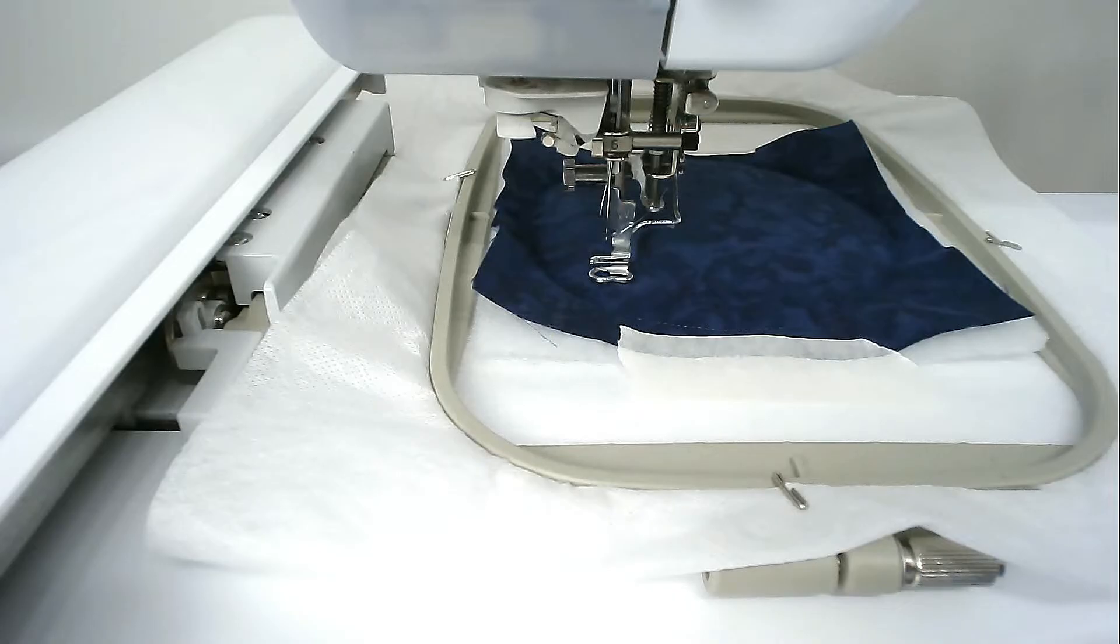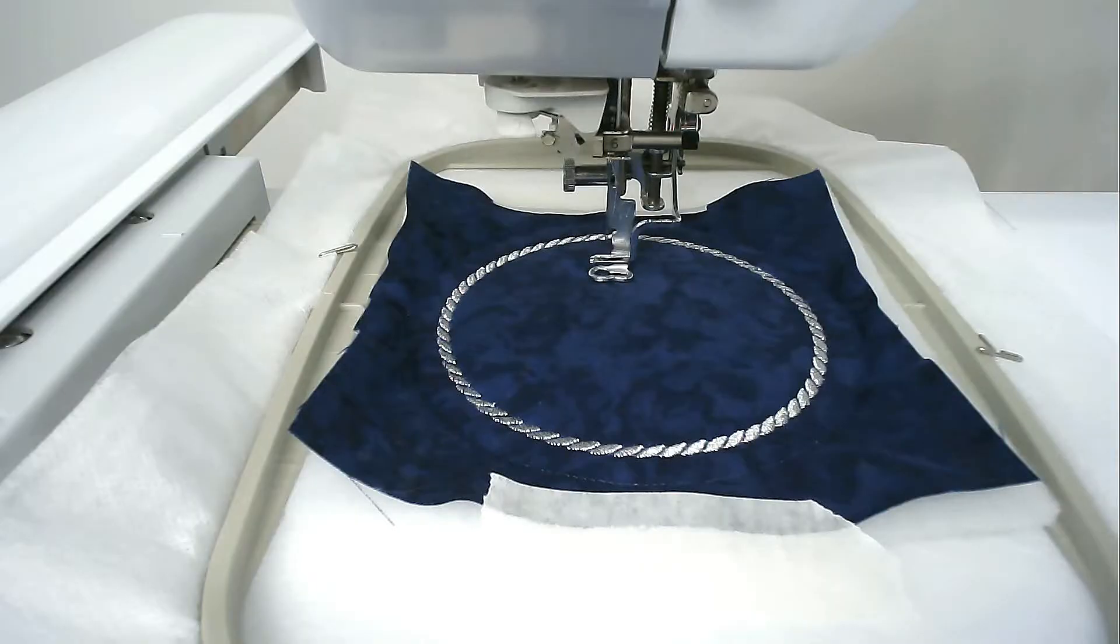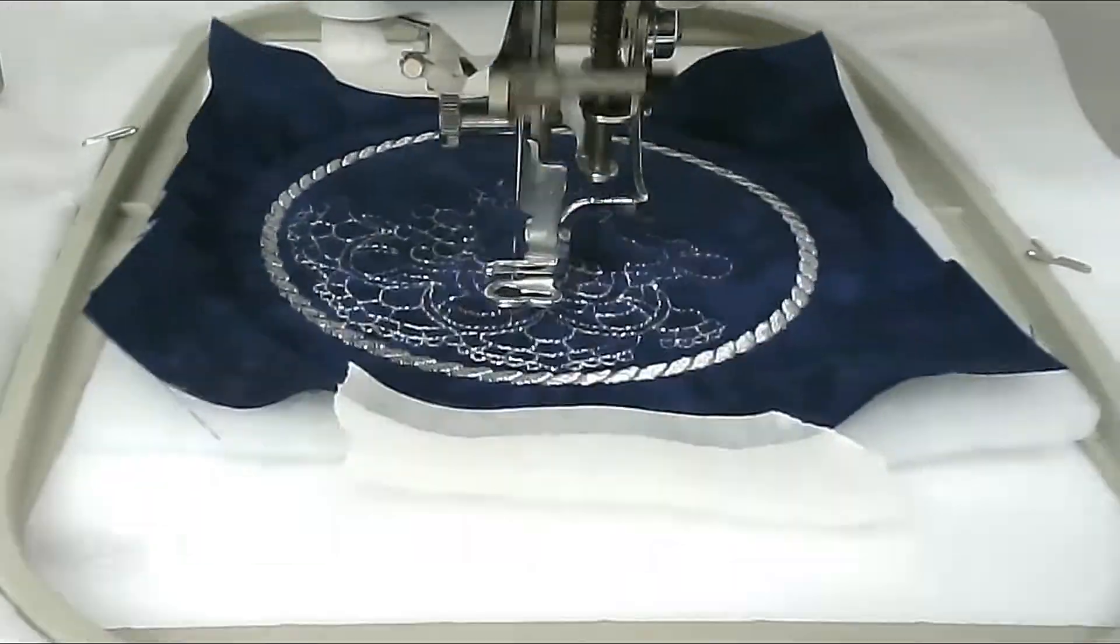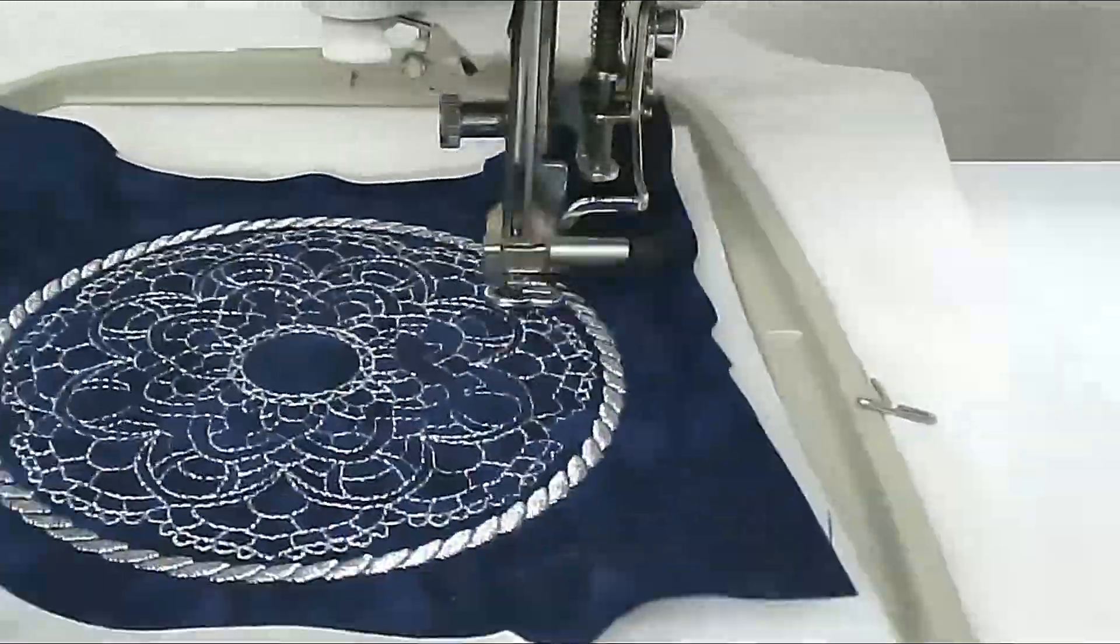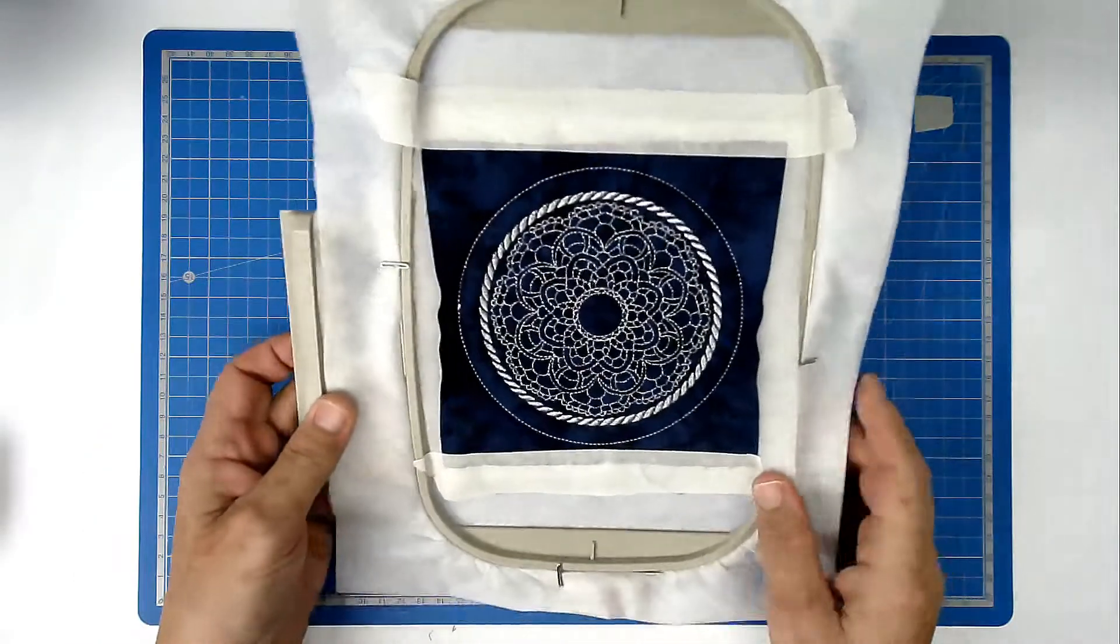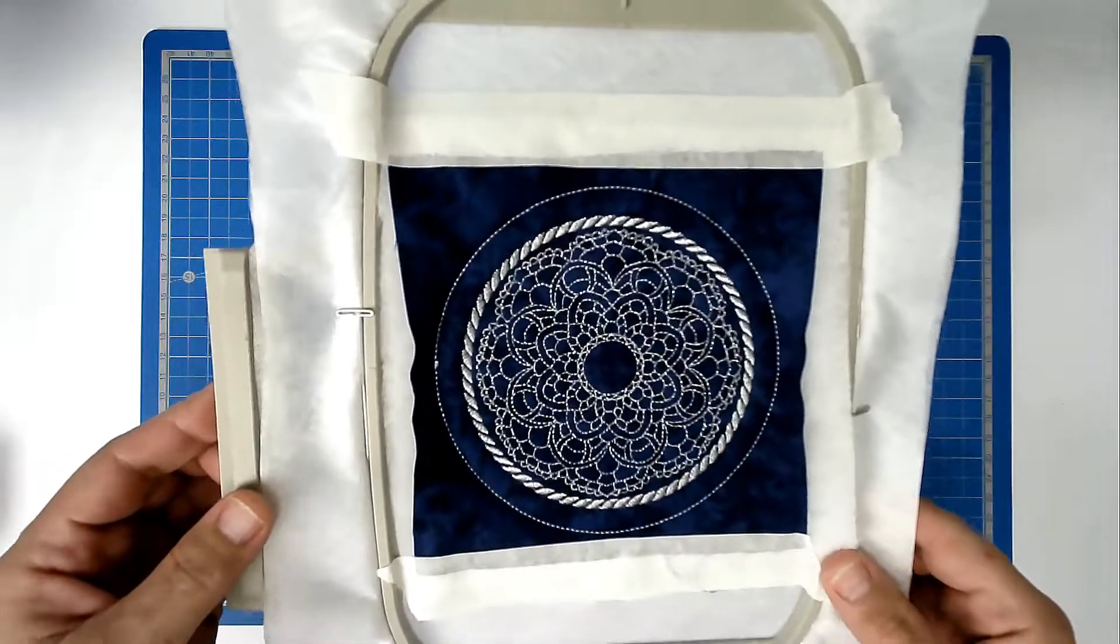That's going to do the decorative rope-like stitching around the outside of the mandala. If you want to change your thread color now is the time to do so. I'm staying with the silver metallic and then we're going to stitch round number four. And that's all the decorative stitching completed. I hope you can see that it looks amazing. I love this metallic thread.